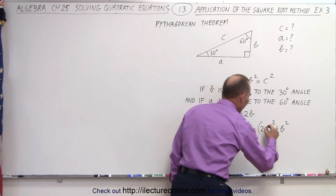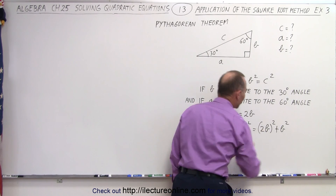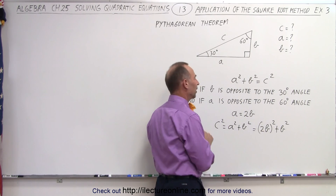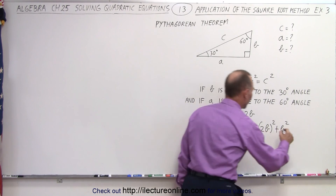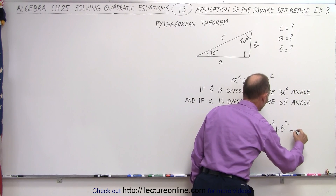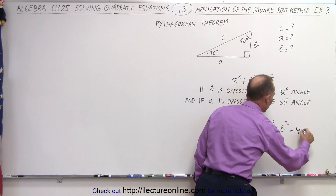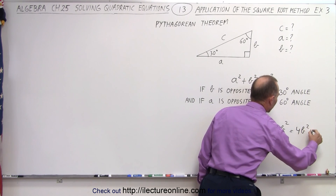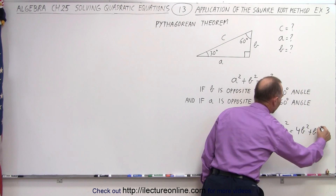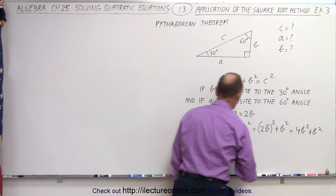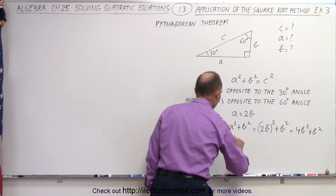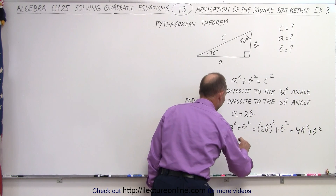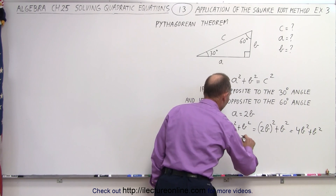A is 2 times B. There we go, that's better. So it's 2B squared plus B squared, which is equal to 4B squared plus B squared. In other words, C squared is equal to 5B squared.